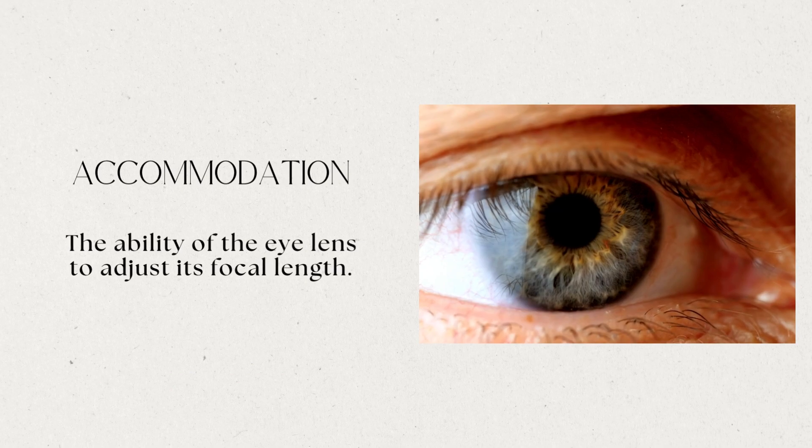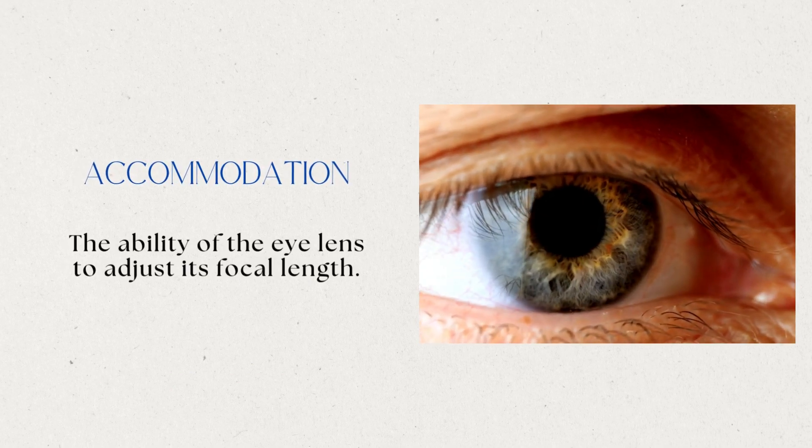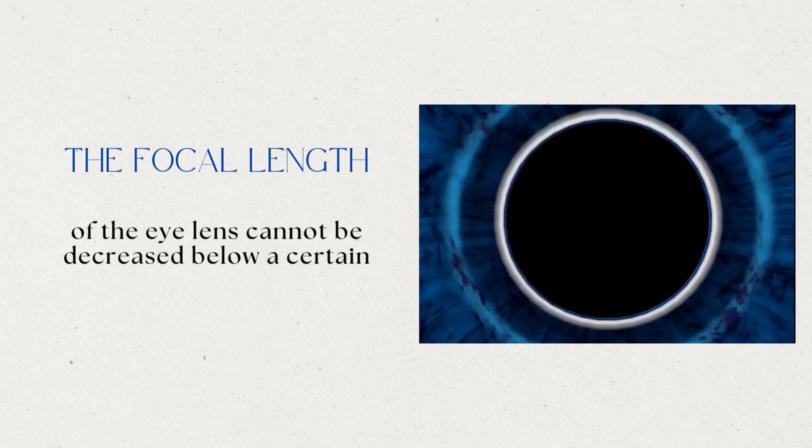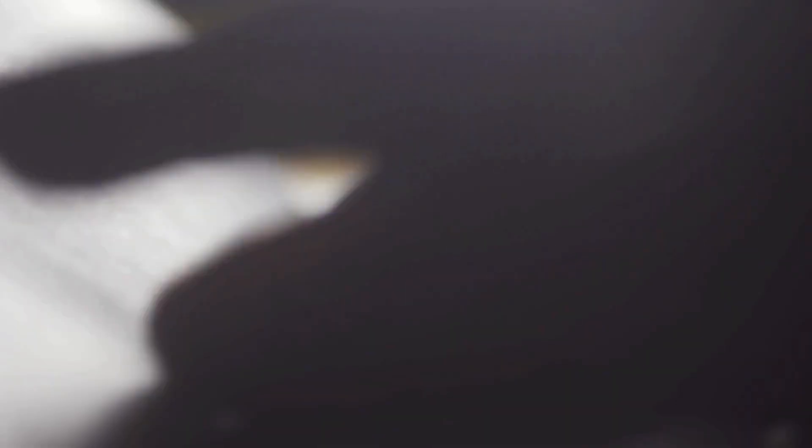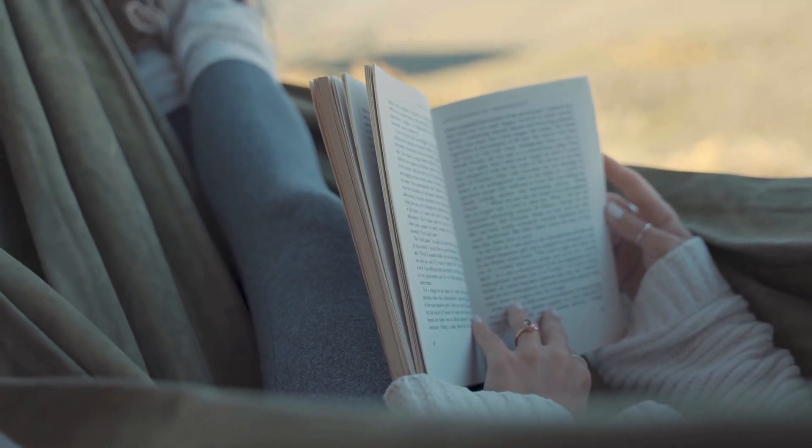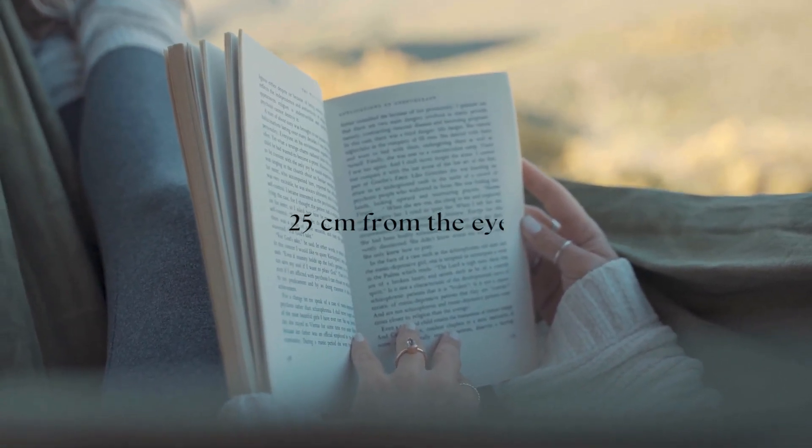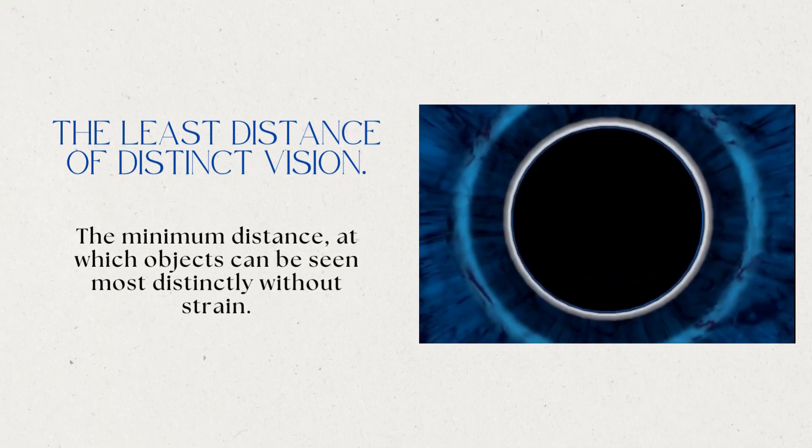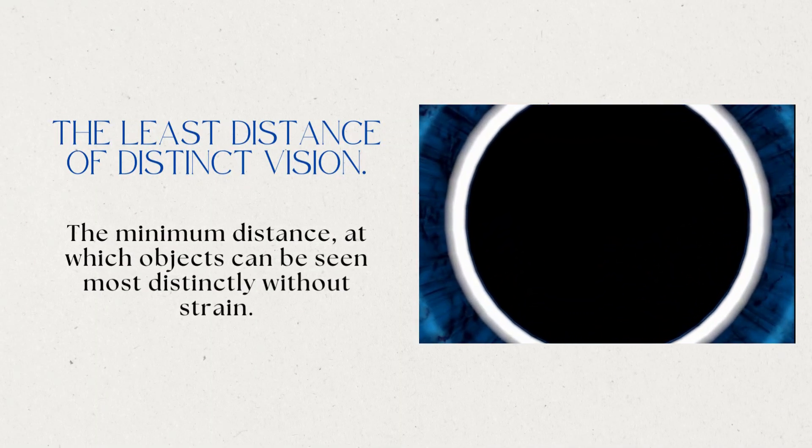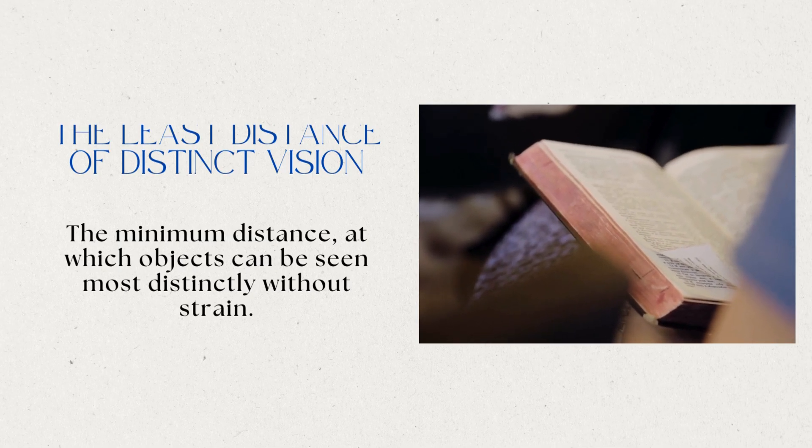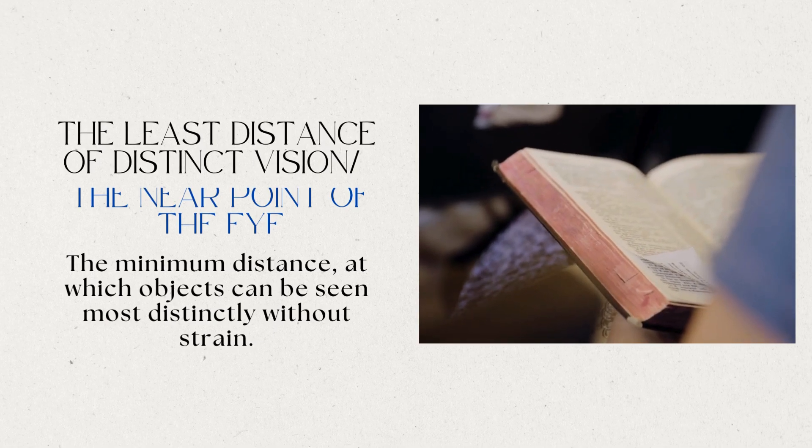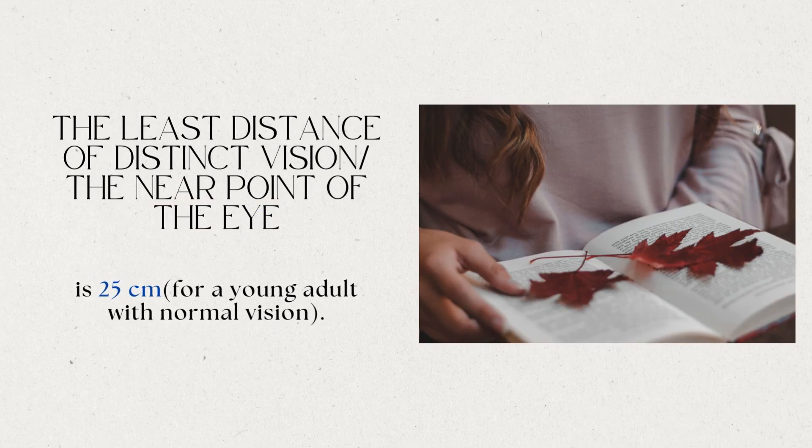The ability of the eye lens to adjust its focal length is called accommodation. However, the focal length of the eye lens cannot be decreased below a certain minimum limit. Try to read a printed page by holding it very close to your eyes. You may see the image being blurred or feel strain in the eye. To see an object comfortably and distinctly, you must hold it at about 25 cm from the eyes. The minimum distance at which objects can be seen most distinctly without strain is called the least distance of distinct vision. It is also called the near point of the eye. For a young adult with normal vision, the near point is about 25 cm.